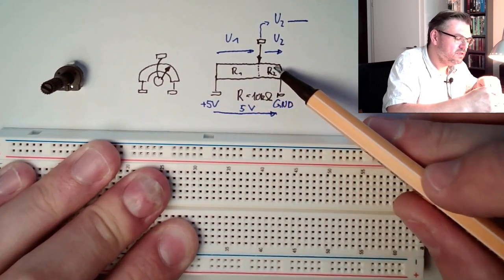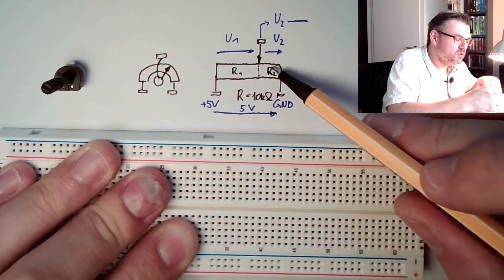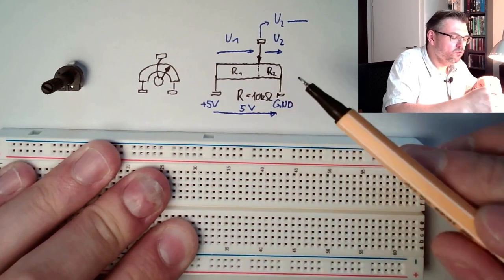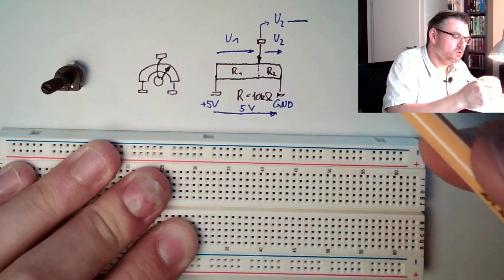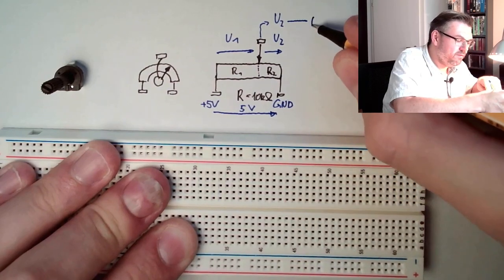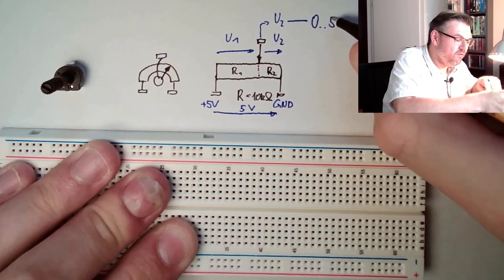If we have it fully to the left, U2 is the full 5 volts. If we slide it to the right, it's getting smaller and smaller. If we are here, U2 is zero volts. So here we have something between zero and five volts.